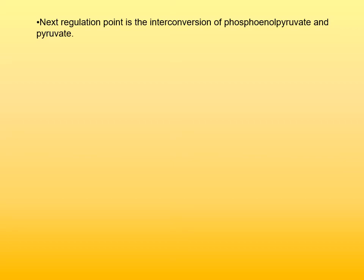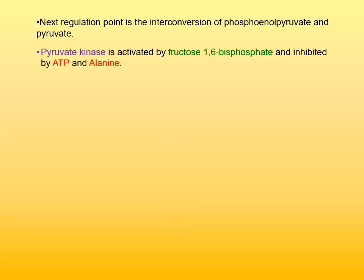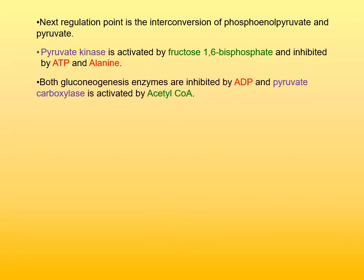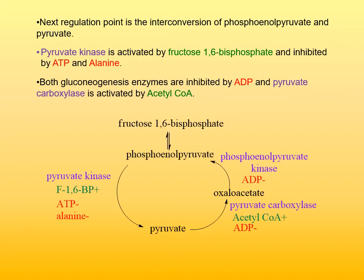The next regulation point is the interconversion of phosphoenolpyruvate and pyruvate. Pyruvate kinase, the glycolysis enzyme, is activated by fructose-1,6-bisphosphate — feedforward stimulation covered earlier — and inhibited by ATP and alanine, indicating low energy state and abundance of biochemical precursors. Both gluconeogenesis enzymes are inhibited by ADP, and pyruvate carboxylase is activated by acetyl coenzyme A. Acetyl coenzyme A activation is another example of feedforward stimulation. This is summarized in a diagram showing glycolysis on the left and the two gluconeogenesis steps on the right that bypass this glycolysis step.